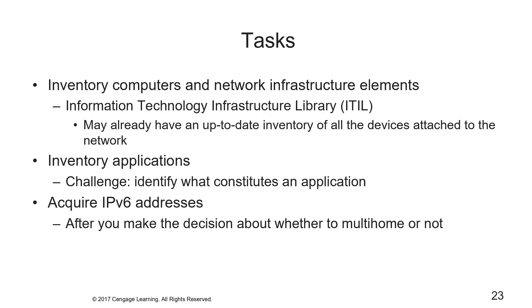Additional inventory data includes: what switch slot and port the device is connected to, whether it has a current IPv4 address and VLAN, how it received its IP address (static, DHCP, or other), whether it requires anything unusual like multicast, whether the model supports v6 and specific interoperability constraints, the software or firmware version and whether it needs upgrading, whether the device is under a maintenance contract, and what network management devices monitor it. For applications, a great deal of thought should precede the inventory activity, since a single OS can have hundreds of components requiring attention.